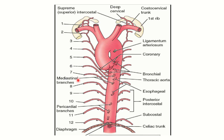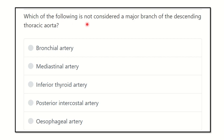Hello everyone, welcome to another question and answer session for the MRCS exam. The question is: which of the following is not considered a major branch of the descending thoracic aorta? We need to find out the branches of the descending thoracic aorta, which starts at the level of the T4 vertebra, travels through the thorax, then leaves through the diaphragm as the abdominal aorta at the level of T12.